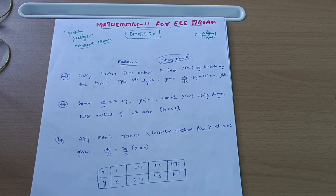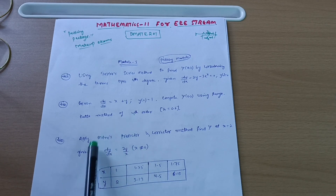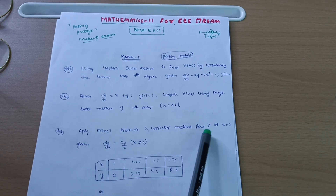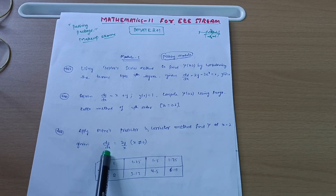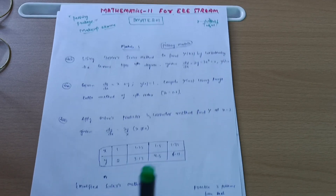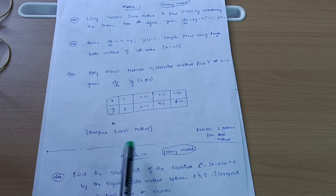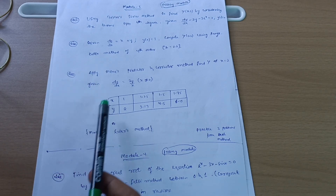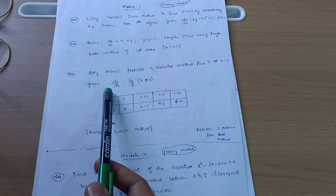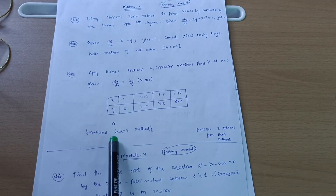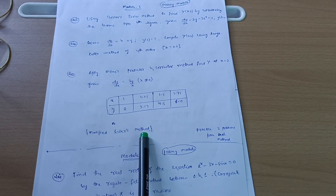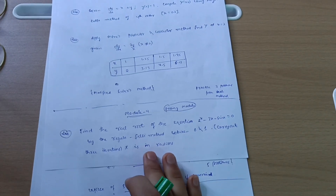Go through the Runge-Kutta fourth order method — a link will be available. Try to understand the concept and solve four problems. Next, apply Milne's predictor-corrector method to find y at x equals 2, given dy/dx equals y/x (x not equal to 0) — data will be given. These three concepts are enough to cover Module 5. If convenient, also go through the Modified Milne's method. The remaining questions will be on Runge-Kutta and Taylor's series, so better to cover these three methods and try Modified Milne's for safety. You can easily grab 20 marks from this module.